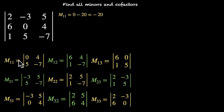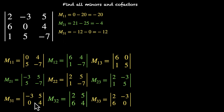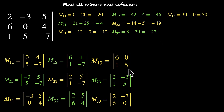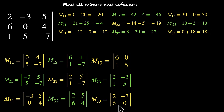Now let's find these values. M11 is 0 minus 20, that's minus 20. M21 is 21 minus 25, that's minus 4. M31 is minus 12 minus 0, that's minus 12. M12 is minus 42 minus 4, so it's minus 46. M22 is minus 14 minus 5, that's minus 19. M32 is 8 minus 30, that's minus 22. M13 is 30 minus 0, that's 30. M23 is 10 minus minus 3, so that's 13. M33 is 0 minus minus 18, so that's 18.